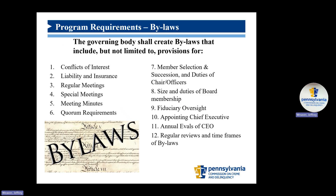Required aspects of bylaws must include conflict of interests related to relationships or actions that might conflict with the best interests of the agency, and such relationships and actions might result in the use of assets, business, or activities of the agency. Additional required aspects include liability and insurance requirements, regularly scheduled meetings (quarterly or monthly), calling and conducting special meetings in addition to regular meetings, and taking and transcribing minutes. Minutes should be reflective of all items discussed, proposed, voted on, quorums, etc., including attendance, actions taken, and committee reports.